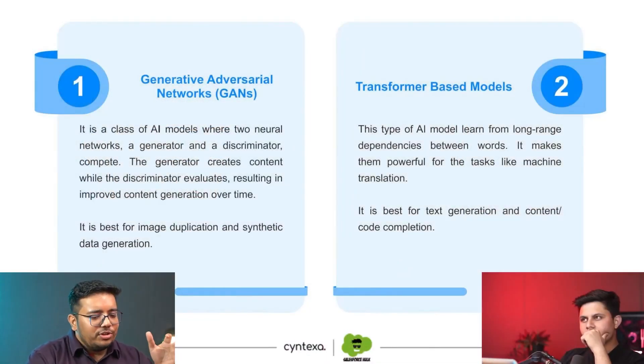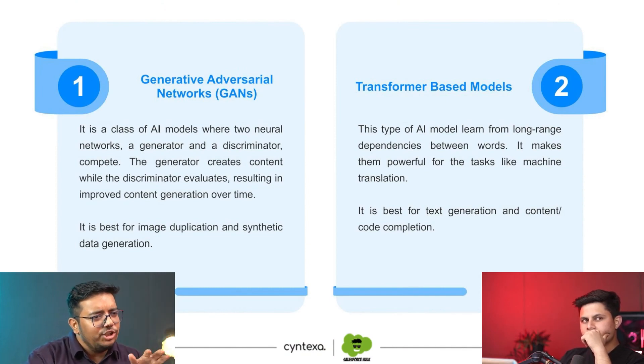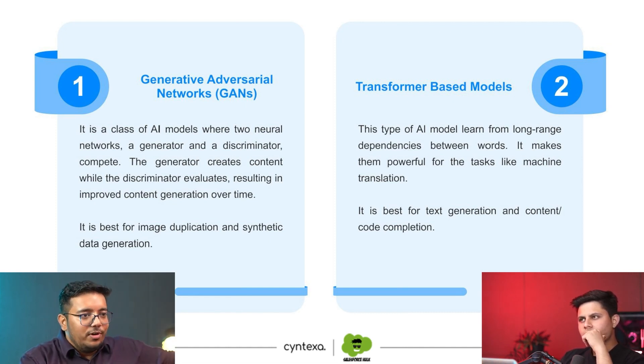Then there are transformer-based models. These models generate data by using an attention mechanism. What it does is it takes a word and checks where it was used before — in which particular context — and in which context it is being used after the text, then tries to identify what it means overall. This is how transformer-based models work. They are primarily used for text-based generation, completions, translations, and text generation.